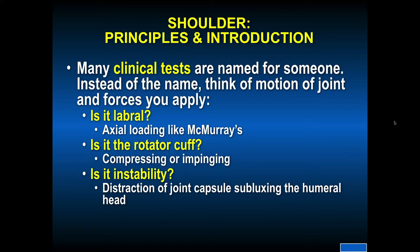Is it instability? Distraction of the joint capsule is done by subluxing the humeral head. Describe the direction. If there is apprehension, is the direction of the instability posterior, anterior, inferior, or all of the above as in multi-directional instability?